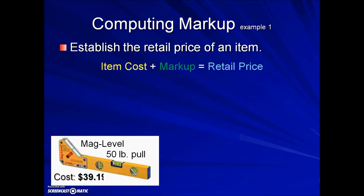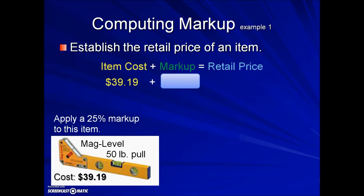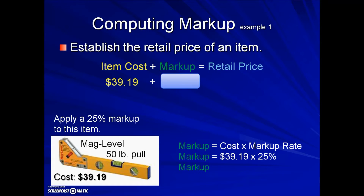In this example we have a level with a cost of $39.19, and this business is charging a 25% markup on this item. We need to do a percentage problem to calculate that amount. We'll take the cost, which is acting like the base, times the markup rate. The markup rate has to be expressed as a decimal, so moving the decimal two places to the left we have 0.25, resulting in a value of $9.80.